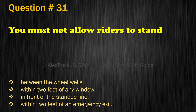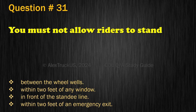Question 31. You must not allow riders to stand: Between the wheel wells; Within two feet of any window; In front of the standee line; or Within two feet of an emergency exit. The correct answer is: In front of the standee line.